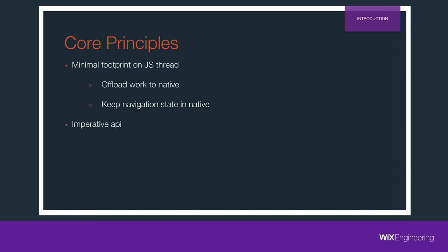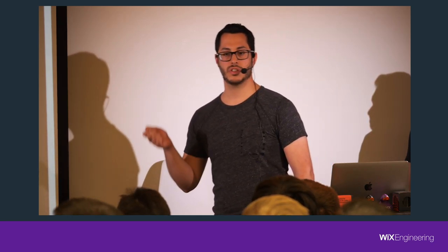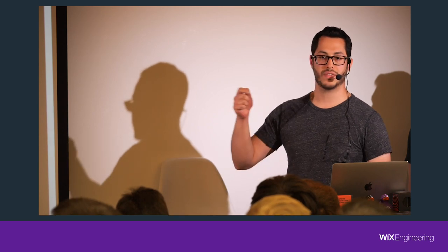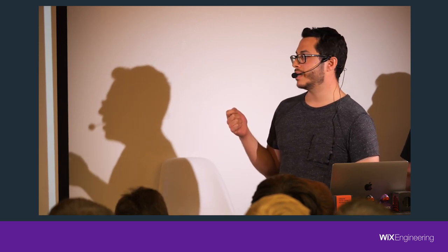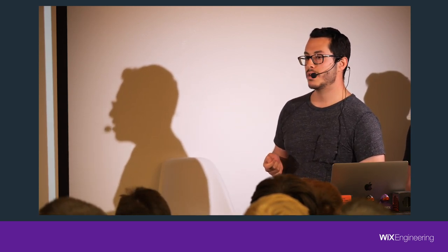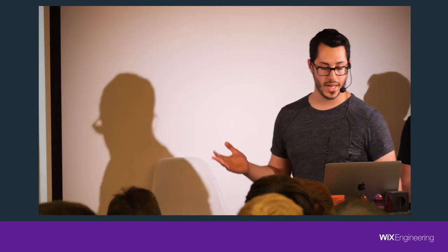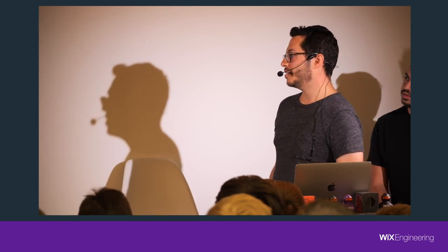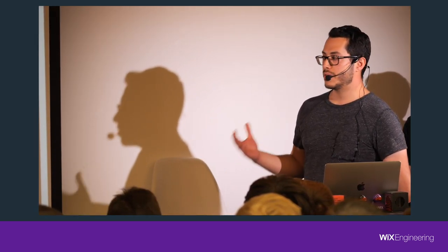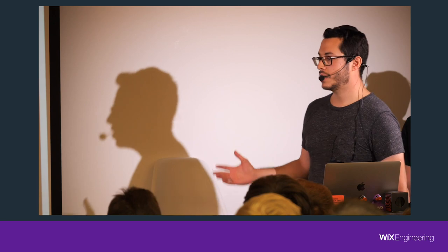The second principle: when we first wrote the library, we were all native developers. Native APIs are all imperative — you start an activity, you start a fragment, you add a fragment. Because we wanted to keep the footprint lean on the JavaScript thread, we realized all we needed to do was expose those native APIs to JavaScript. So there's no point going declarative — we go imperative. This was a big thing because React Native strongly promotes a declarative approach, but we said no, we're going to do it imperatively.